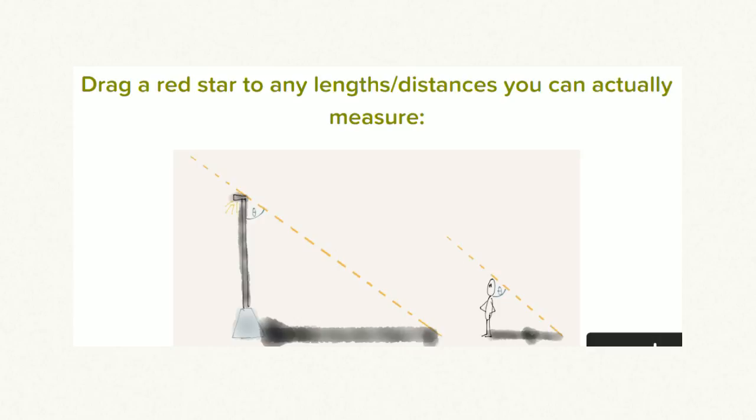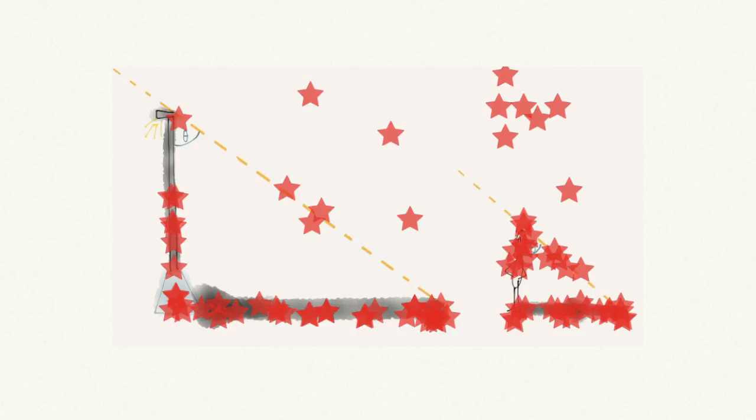For this problem, I also added a question about which distances we could physically measure and which ones we couldn't. My students put red stars on the distances they thought we could physically measure. We had a class discussion about whether we could reach the top of the lamppost with a ruler, as well as whether we could measure from the top of the lamppost through the air to the tip of the shadow. Students did not necessarily adjust their answers after our class discussion.